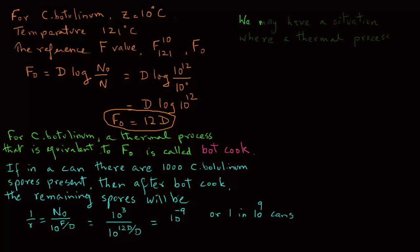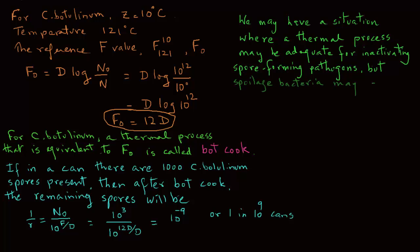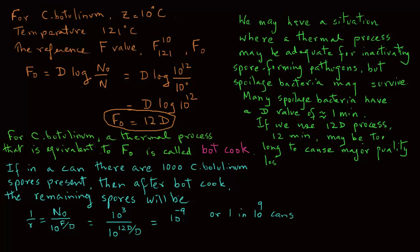Now, we may have a situation where a thermal process may be adequate for inactivating spore-forming pathogens. But the bacteria that causes spoilage may survive, because many spoilage bacteria have a higher D-value of around 1 minute. If we use a 12D process based on the spoilage bacteria, then, for example, we will need 12 times 1 minute. That means it's 12 minutes. That may be too long for heating, and it will cause major quality loss.